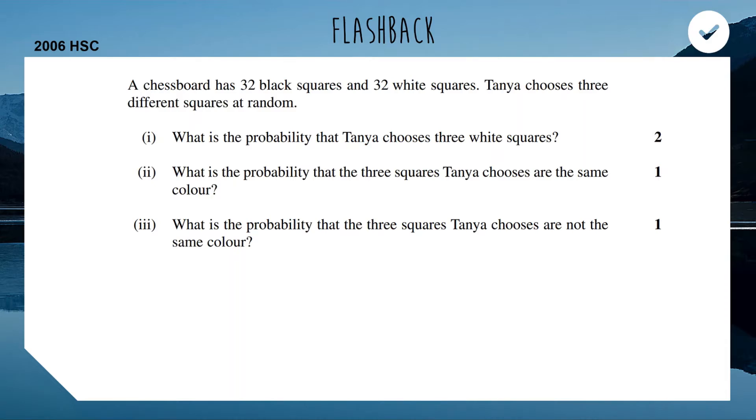Last week we looked at the fact that when you want to find the probability of multiple events happening in succession, you're going to end up multiplying those probabilities together. For the first one, if you want the probability of white and then white and then white, well on the first one we've got 32 white out of 64 square chance. And now because we can't pick that square again, there's only 31 white squares to choose from out of a total of 63. And then another step down for the last one, 30 out of 62. That's our three stages. If we multiply them all together, we get 5 out of 42. And there's your answer for two marks.